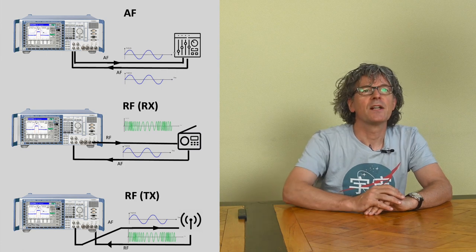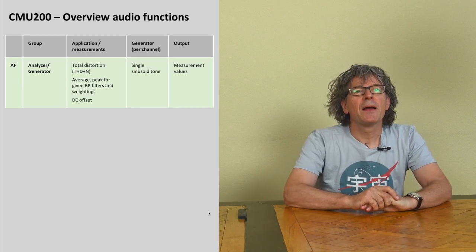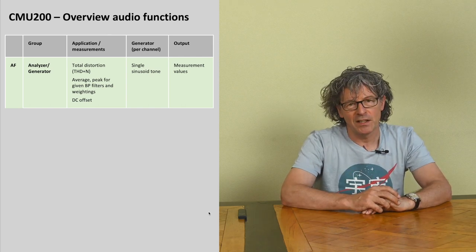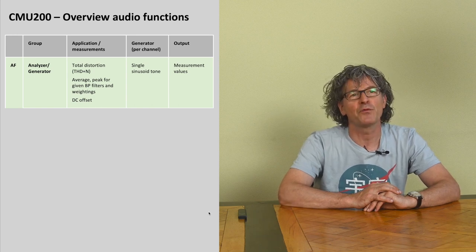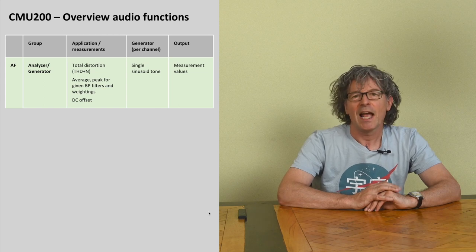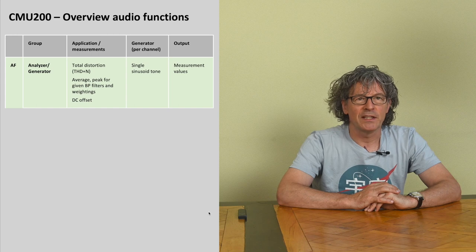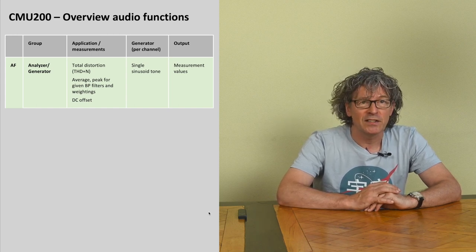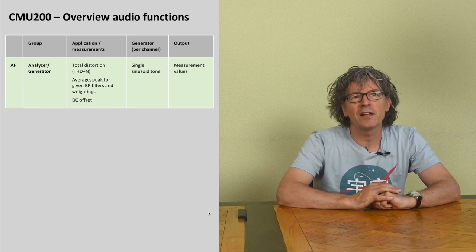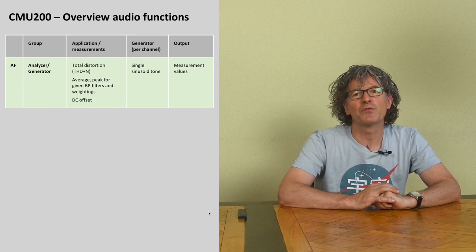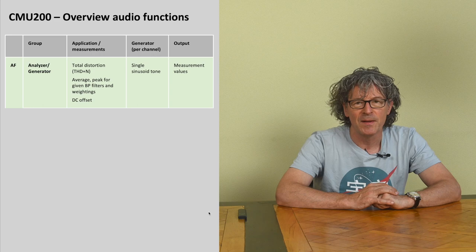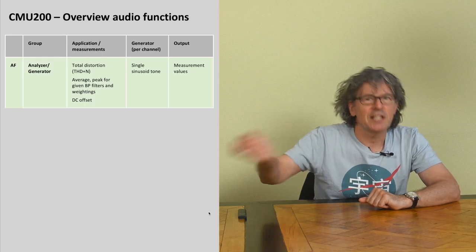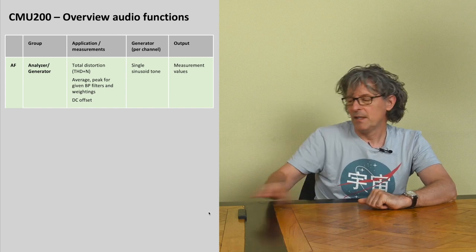Let's quickly review the audio measurement functions — or groups, as they're called in the device. I'll stick with the terminology Rohde & Schwarz uses. The first is simply called Analyzer/Generator: these are basic measurements on an audio device. You measure total harmonic distortion plus noise (THD+N), signal strength like RMS average or peak signals, and you can use different bandwidth filters and audio weighting patterns. You can also see the DC offset of your device. The generator puts out a single sine tone and whatever comes back is measured.